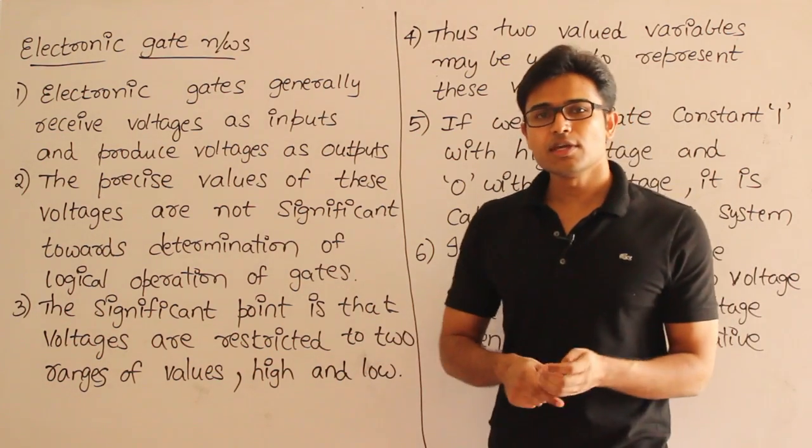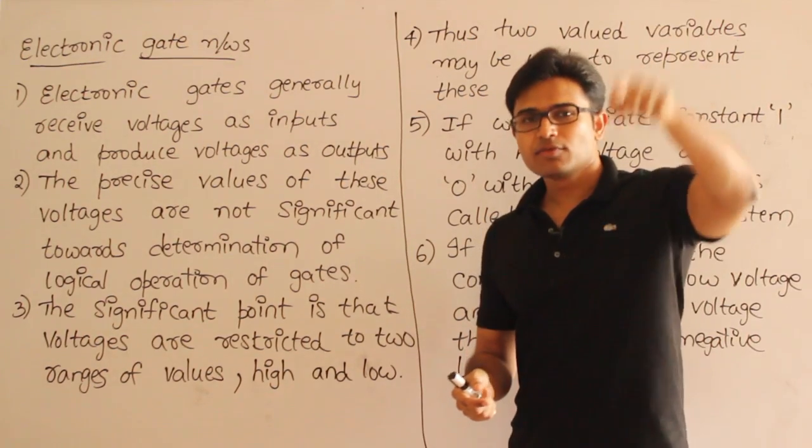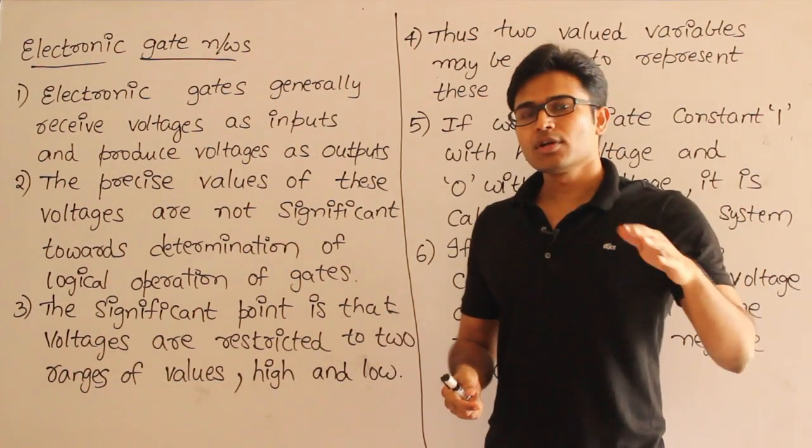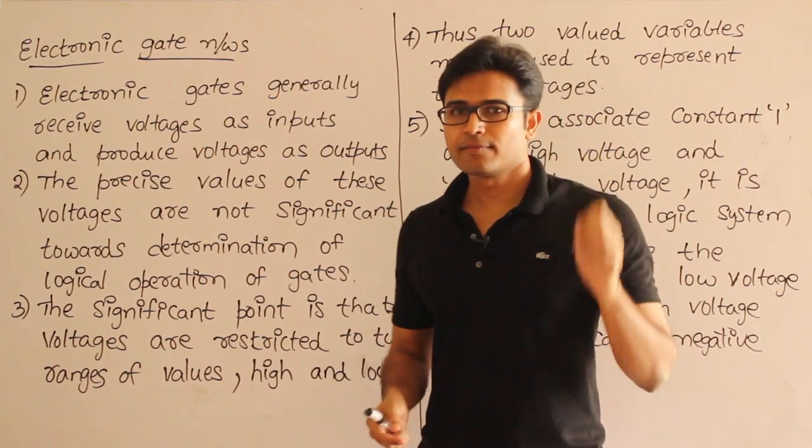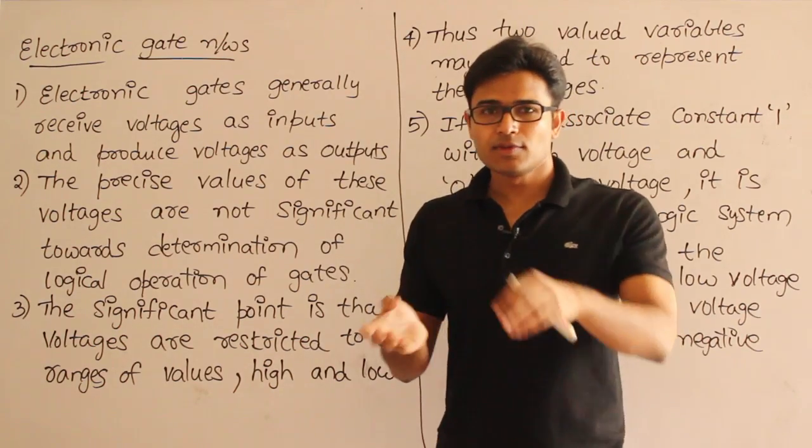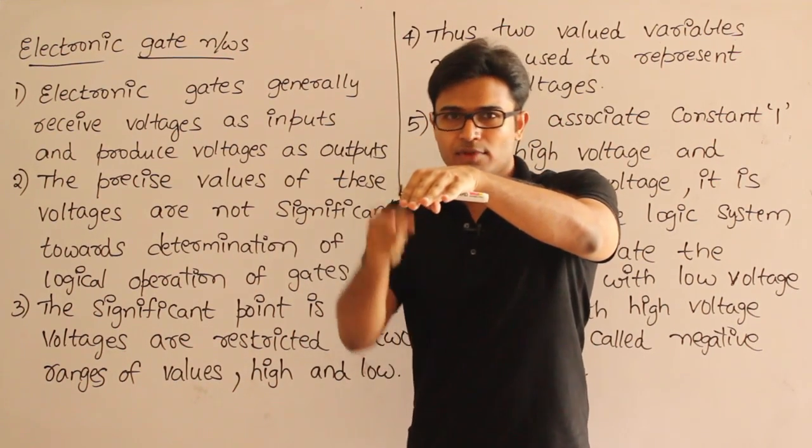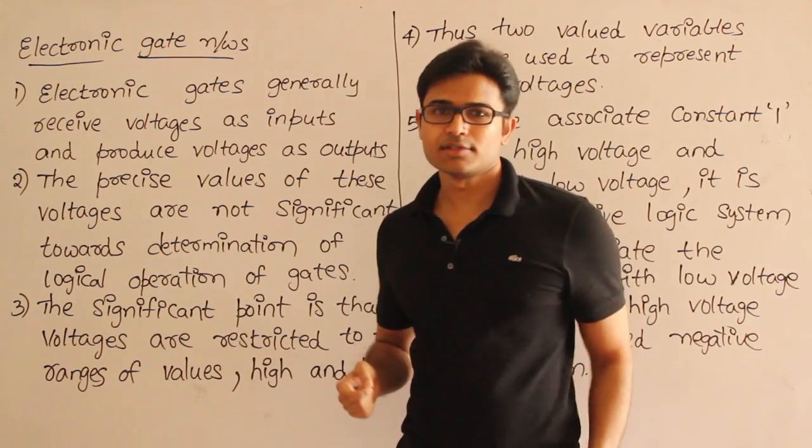We have some ranges called high range and low range. If the voltage is anything between this high range, we don't care exactly what its value is. We just say the voltage is high, or represent it using some value. And if the voltage falls in the range of low, we just say that the voltage is low. We are not exactly interested in what the voltage is.